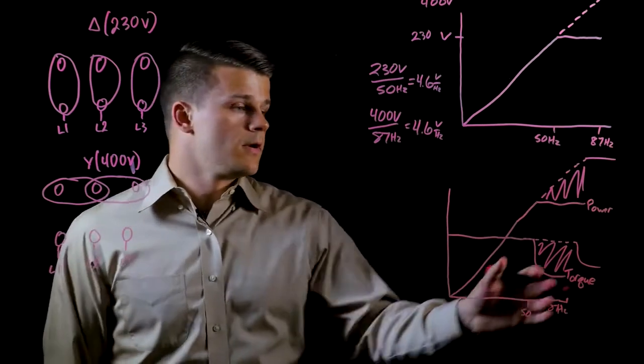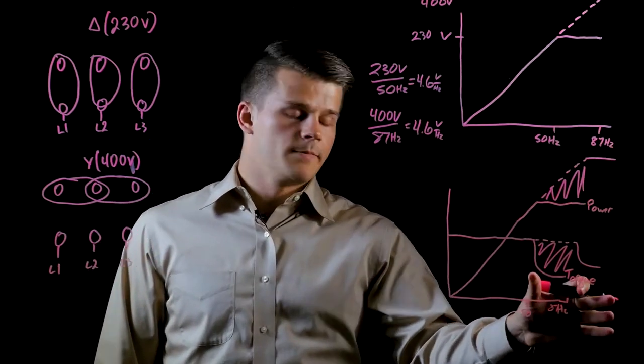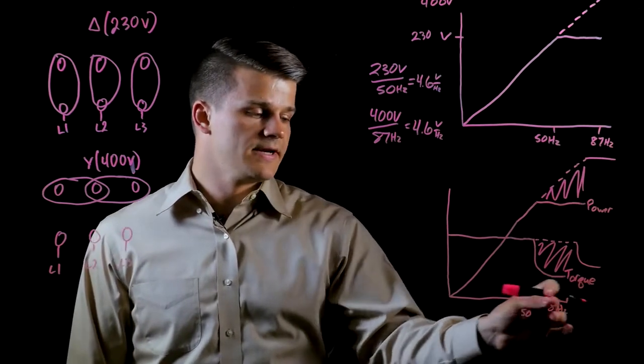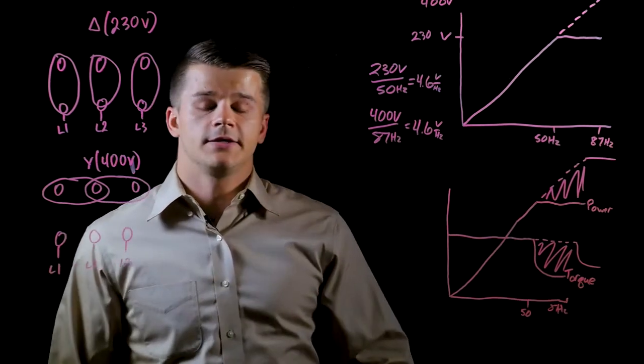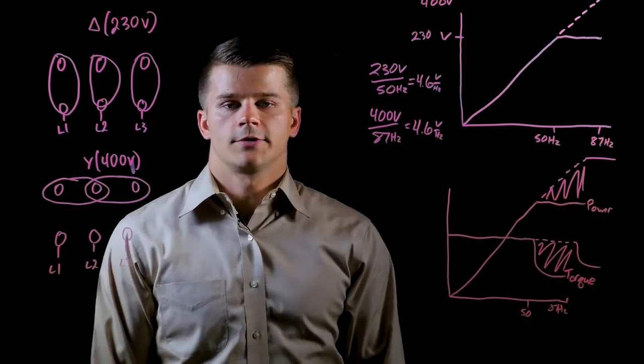As you can see, we get this extra power and the torque maintains constant from 50 to 87 Hertz in the same IEC rated motor. That's the 87 Hertz motor trick.